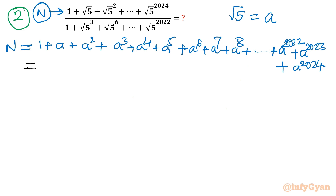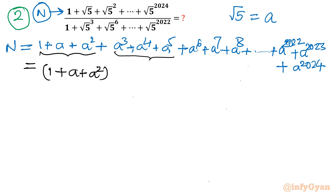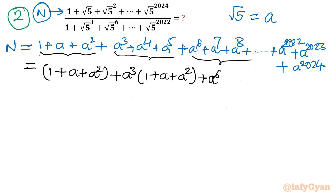What I am trying to show is how we can apply factorization. From the first three terms I will write them as they are: (1 + a + a²). Then for the next three terms, a³ is common, so I will write a³·(1 + a + a²) — the same bracket comes out. In the next three terms, a⁶ is common, so again (1 + a + a²).